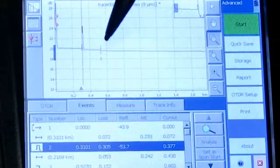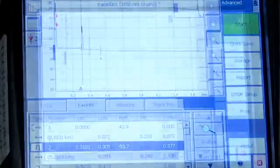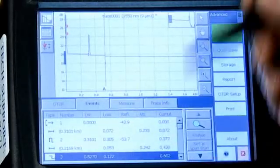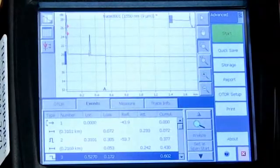The third event is the splice connecting the two reels and that value is 0.172 dB. Again, not too bad. We prefer them to be about a 0.1.